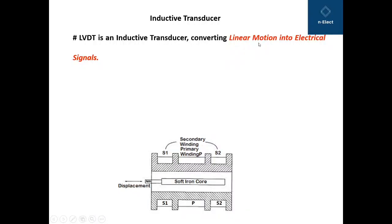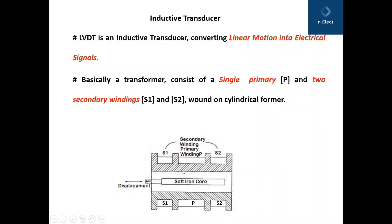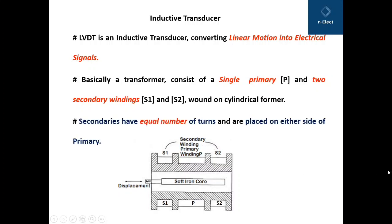LVDT basically converts the linear motion of the core into an electrical signal, that is, into a differential output voltage. It is essentially a transformer consisting of one primary winding and two secondary windings S1 and S2, which are wound on a cylindrical former. The secondaries have equal number of turns and are placed on either side of the primary.